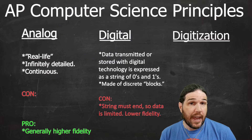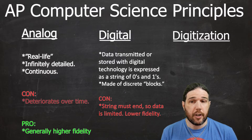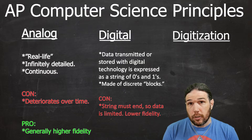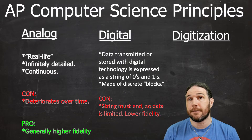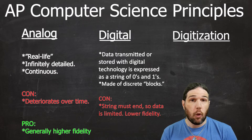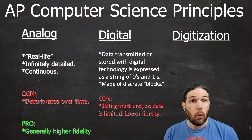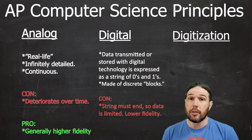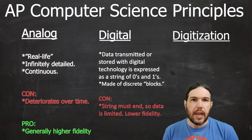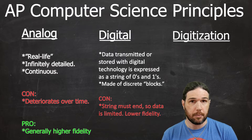The problem with analog media is that it deteriorates. Since a record is made out of physical grooves in vinyl, if it's scratched, or even just if it gets too old and it's not maintained properly, those grooves could change, which would change the sound when you play it on a record player.